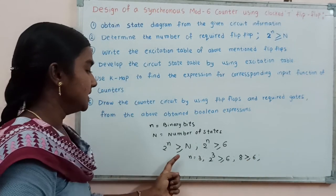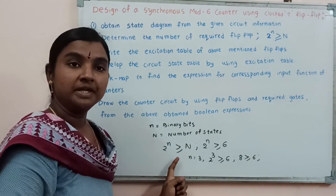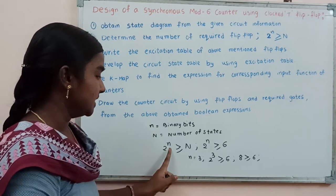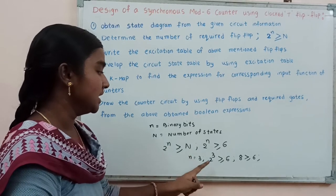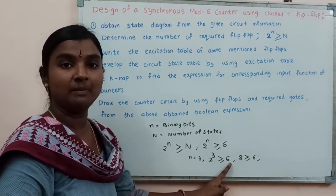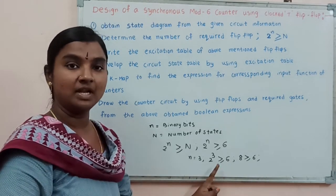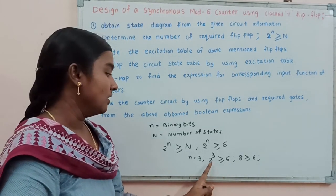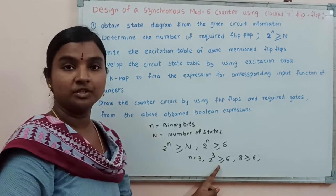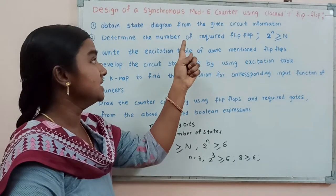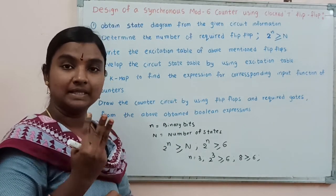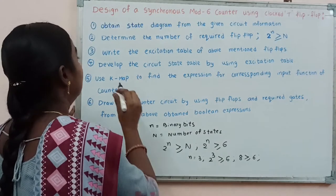If we consider small n equal to 2, then 2^2 = 4 is not greater than or equal to 6, so that equation will not satisfy. Only for n equal to 3 is the equation satisfied. Therefore, for this mod 6 synchronous counter, the number of flip flops required is 3.